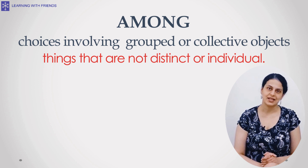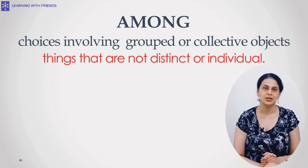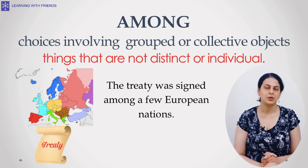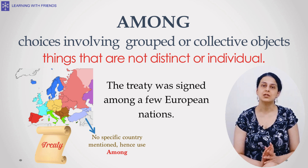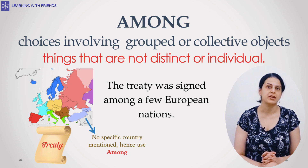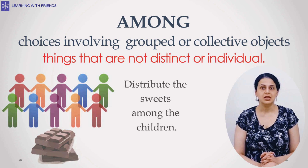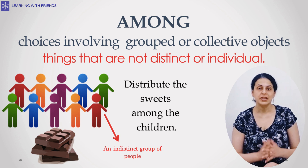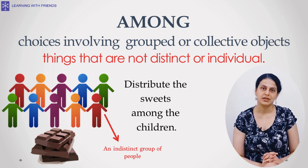Now let's consider 'among.' Among is used for choices involving grouped or collective objects, especially things that are not distinct or individual. For example, 'The treaty was signed among a few European nations' — here we use European nations as a group and do not particularly specify which countries. Hence we use 'among.' Another example: 'Distribute the sweets among the children' — children here refers to an indistinct group of people and nobody in particular.